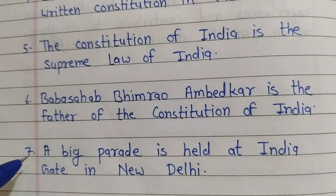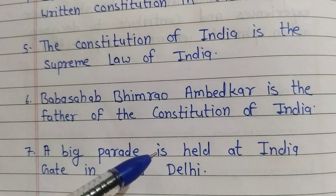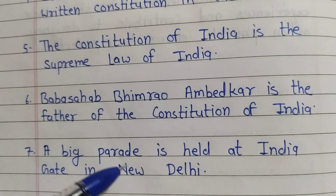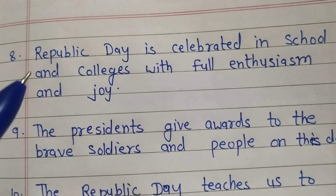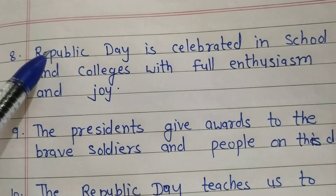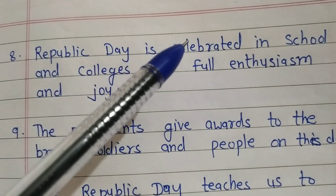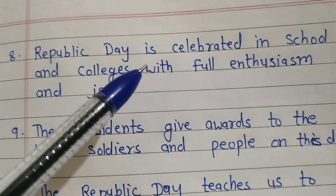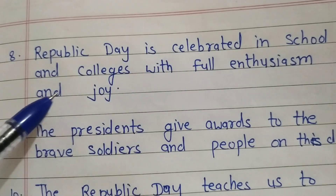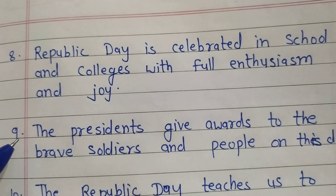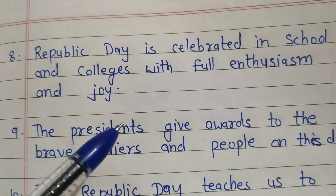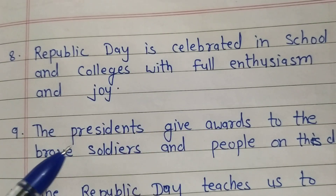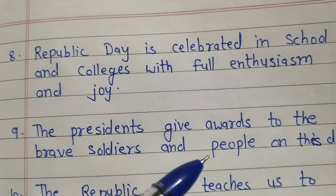Seventh line is: a big parade is held at India Gate in New Delhi. Eighth line is: Republic Day is celebrated in schools and colleges with full enthusiasm and joy. Ninth line is: the president gives awards to the brave soldiers and people on this day.